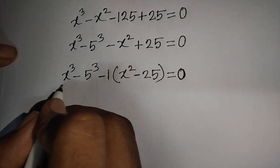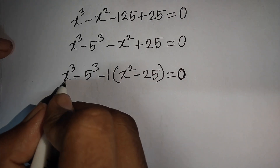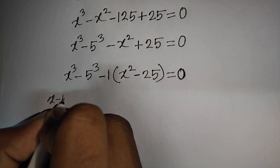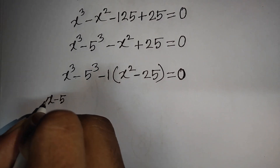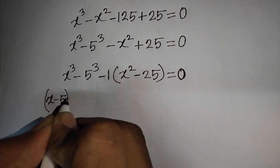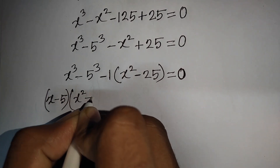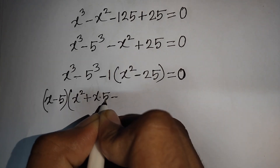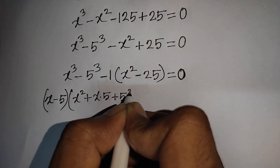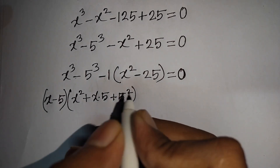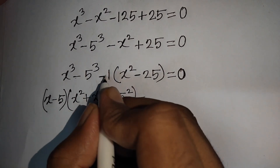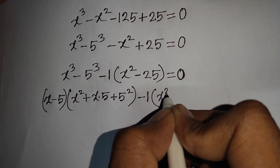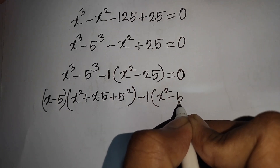Here we apply the formula a³ - b³, where a = x and b = 5. So we write (x - 5)(x² + 5x + 25), then minus 1 times x² minus 1 times 25, which can be written as minus 5², bracket close, equal to 0.